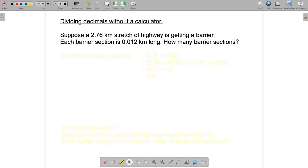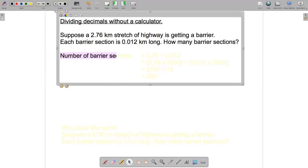First step is to translate our word problem into an equation. So the number of barrier sections we're going to need will be 2.76 divided by 0.012.